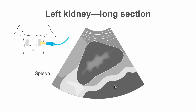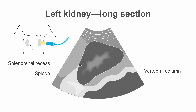We can see the spleen and the vertebral column. Between the spleen and the left kidney, we will see the splenorenal recess. Just like in examining the right kidney, we can see the psoas muscle underneath the left kidney.